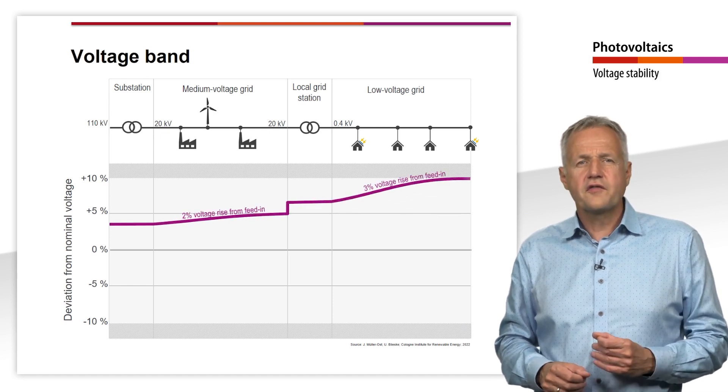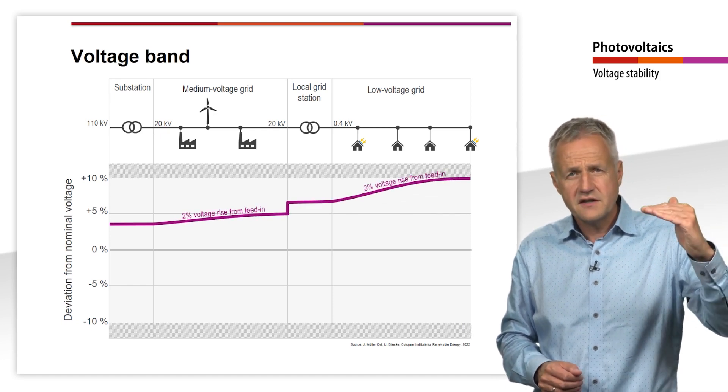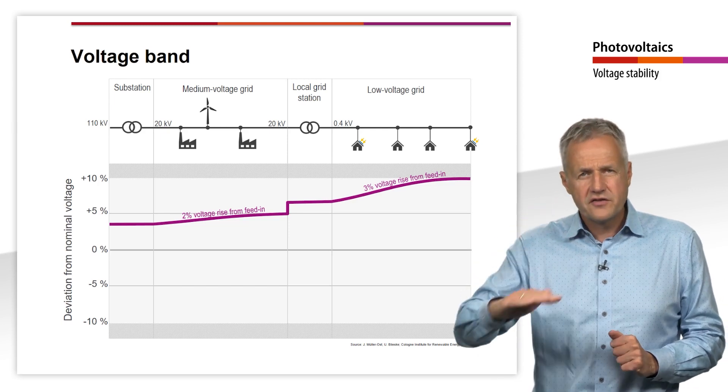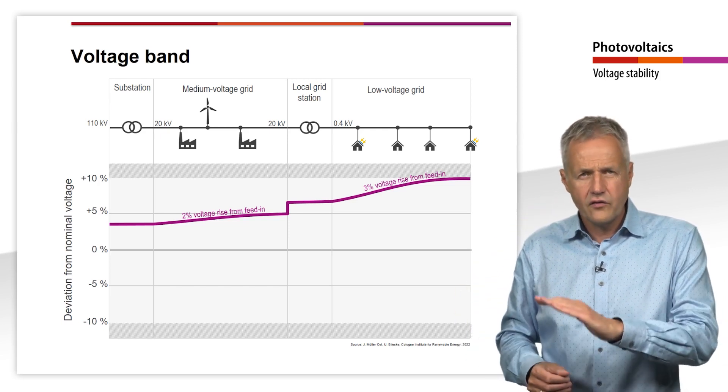2% is reserved for the voltage rise due to the feed-in at the medium voltage level and 3% for feed-in at the low voltage level.